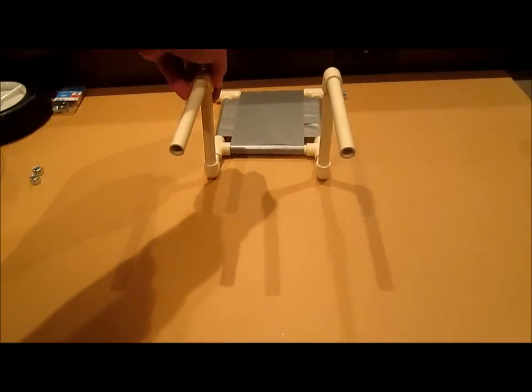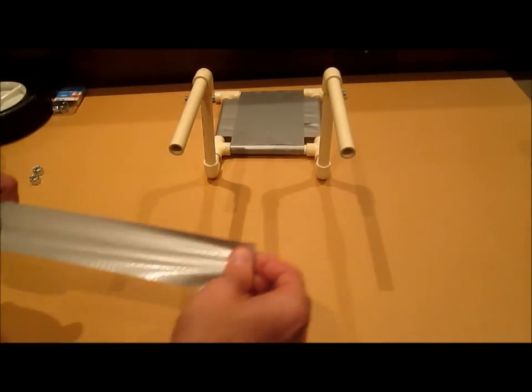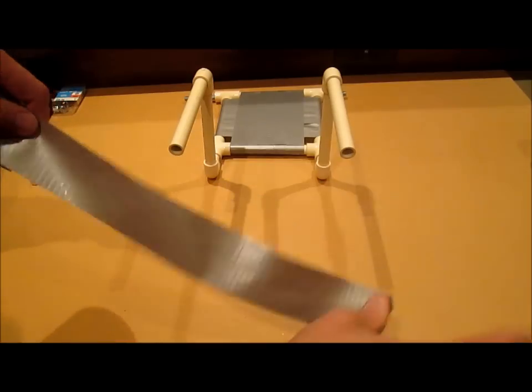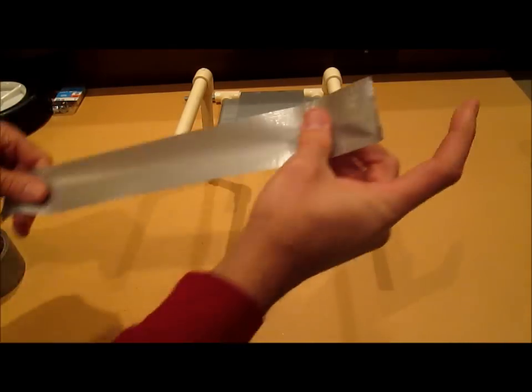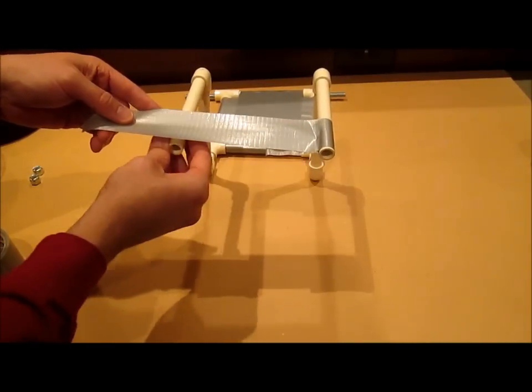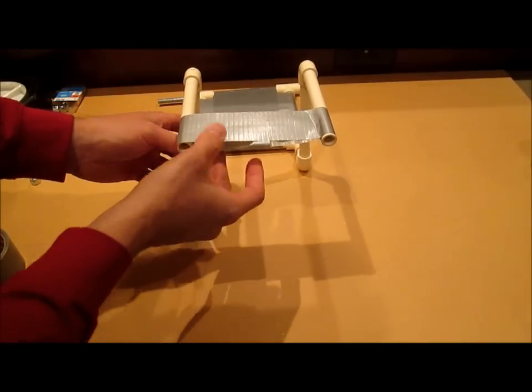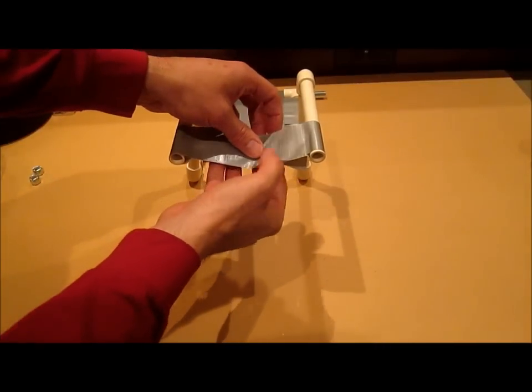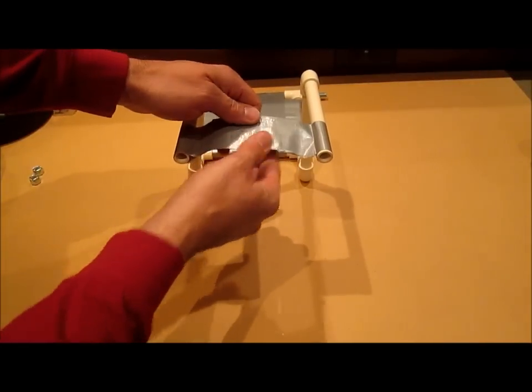Now we make the top strap. Simply take another piece of duct tape much longer and wrap it all the way around on both sides. Put one more piece underneath to make sure you cover all the sticky so you don't get anything in the dog's fur.